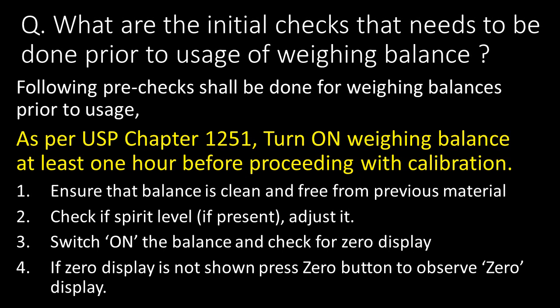What are the initial checks that need to be done prior to usage of weighing balances? As per USP chapter 1251, the following pre-checks shall be done: turn on the weighing balance at least one hour before proceeding with calibration; ensure the balance is clean and free from previous material; check if the spirit level is adjusted, and if not, adjust it; switch on the balance and check for zero display — if zero is not shown, press the zero button.